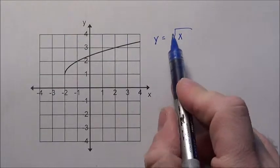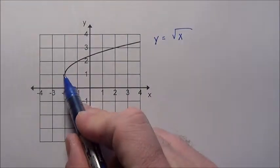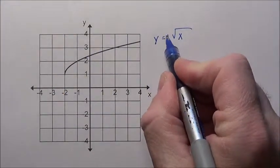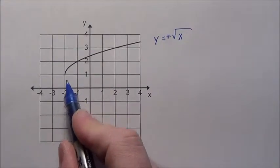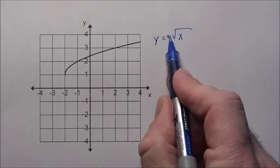So the parent graph would be y equals the square root of x. Since this is the upper piece, we're looking at the positive. If it had the piece going downwards like this, we would have had to put a negative there.